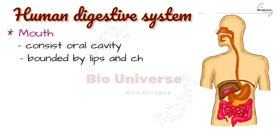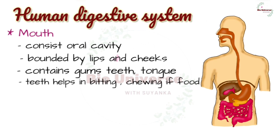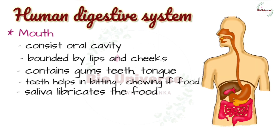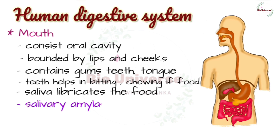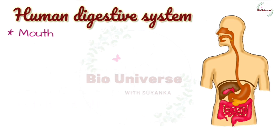The mouth consists of the oral cavity through which food is ingested. It is bounded by lips and cheeks, and contains gums, teeth, tongue, and muscles. Teeth help in biting, cutting, and chewing food — they masticate the food. The tongue tastes food and moves it into the pharynx. The mouth has saliva which lubricates the mouth and food. Saliva also contains salivary amylase, a digestive enzyme that breaks down starch and glycogen to maltose.